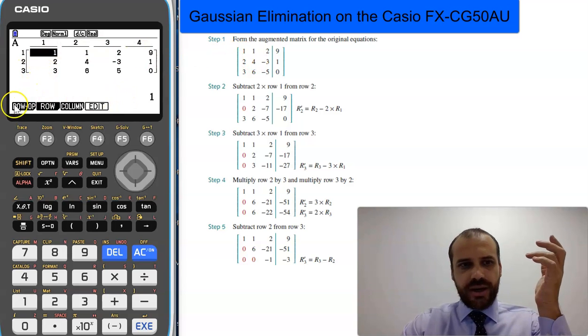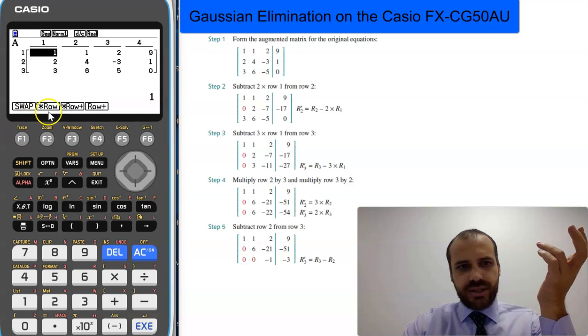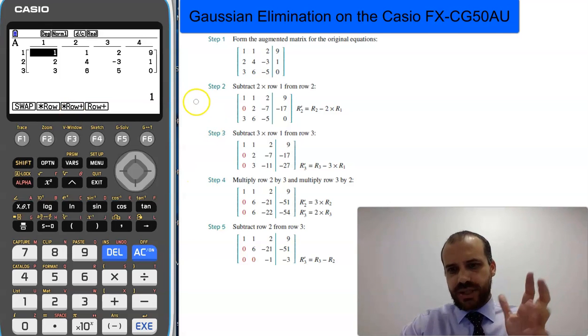Now we just enter in all of our numbers, something that looks like that. After that, we just click row op for row operations. You can see we have a bunch of row operations here. I'll run you through the first couple because they're really easy.